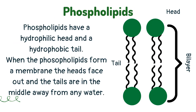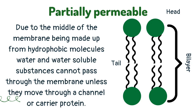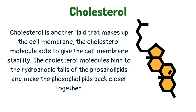Phospholipids have a hydrophilic head and a hydrophobic tail. The hydrophilic head is attracted to water molecules whereas the hydrophobic tail seeks to avoid water molecules. When the phospholipids form a membrane, the heads face out and the tails are in the middle away from any water. Due to the middle of the membrane being made up of hydrophobic molecules, water and water-soluble substances cannot pass through the membrane unless they move through a channel or carrier protein.